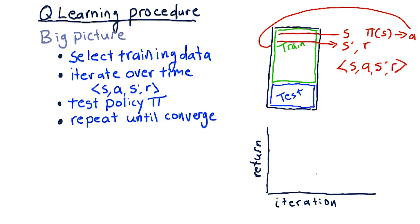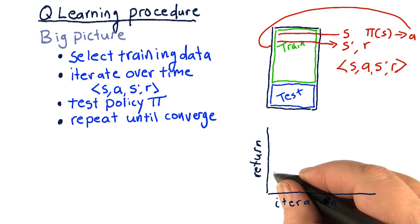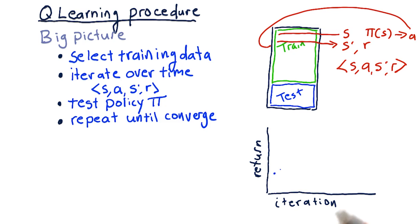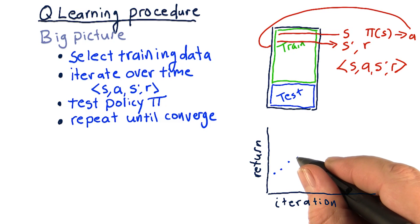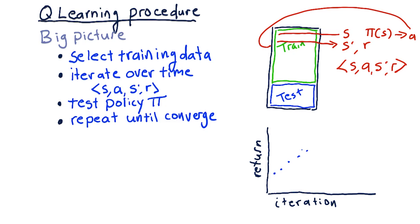So what do we mean by converge? Well, each time we cycle through the data, training our Q table, and then testing back across that same data, we get some performance. And we expect that each time we complete an iteration here, our performance is going to get better and better. But after a point, it finally stops getting better, and it converges.